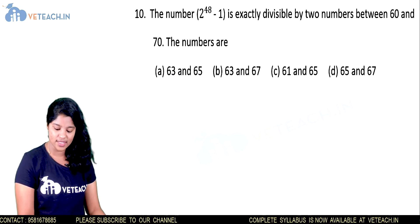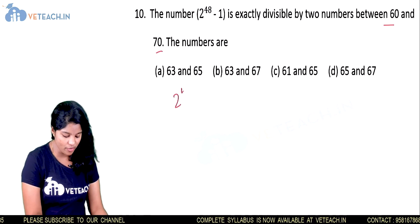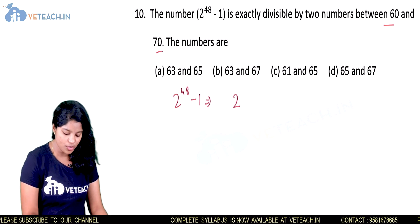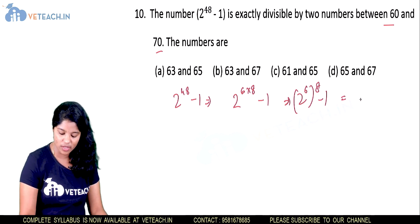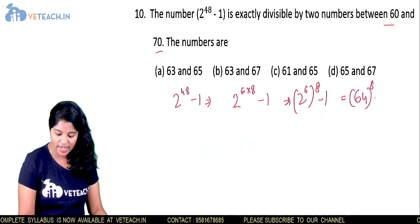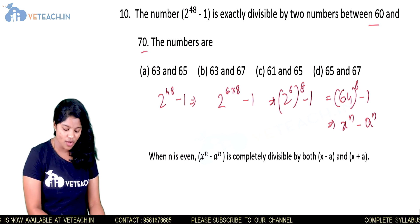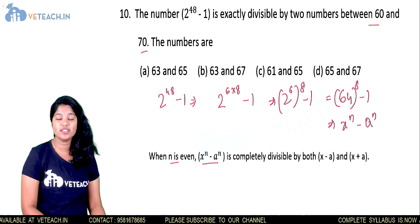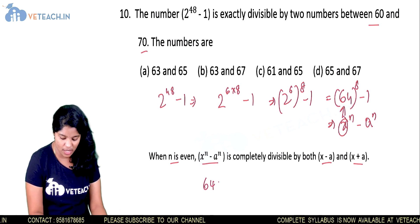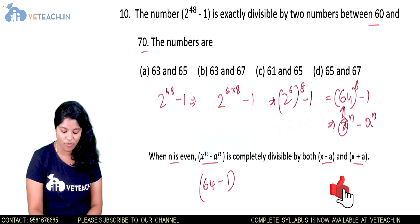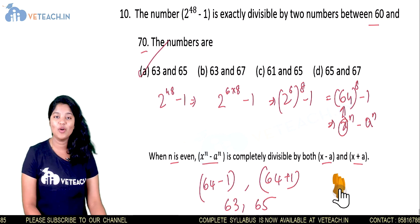Finally: 2^48 minus 1 can be rewritten as (2^6)^8 minus 1, which equals 64^8 minus 1. This is of the form x^n minus a^n with n = 8 (even). So it is completely divisible by both x minus a = 64 minus 1 = 63 and x plus a = 64 plus 1 = 65.